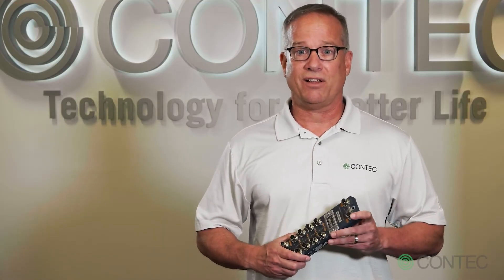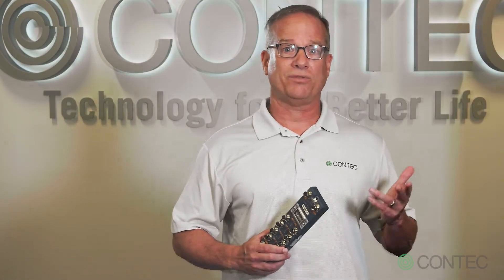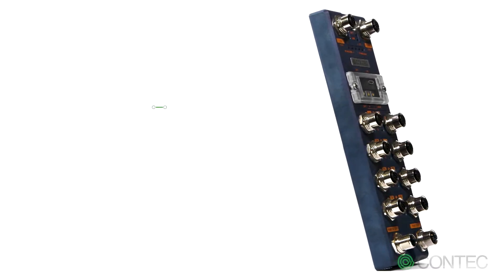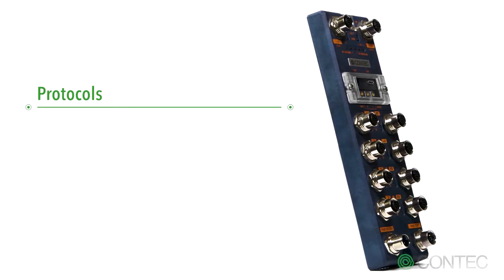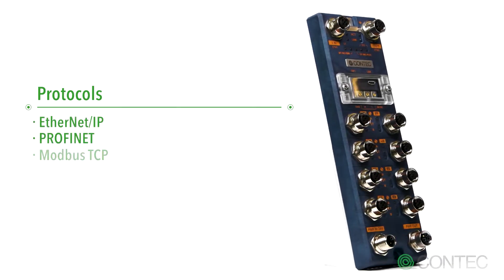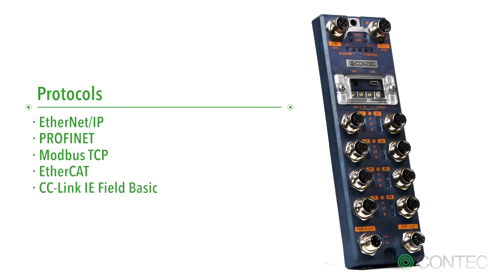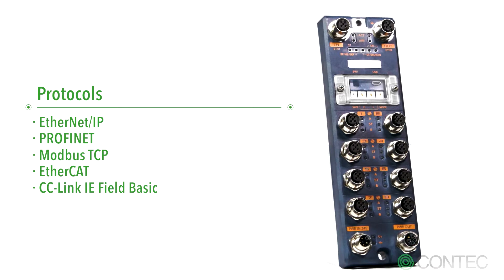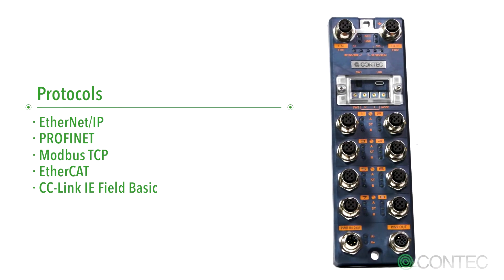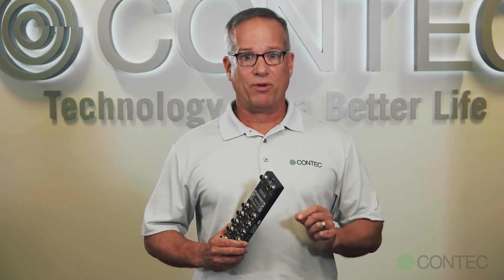However, while this technology may support multiple networks, in many cases the Master Module does not. Contact's IO-Link Master is unique in that it supports the widest possible range of field networks, including Ethernet IP, PROFINET, MODBUS TCP, EtherCAT, and CC-Link IE Field Basic, all from the same device. You don't have to worry about having different devices to support each of these networks. This allows you to standardize and reduce spare parts requirements.